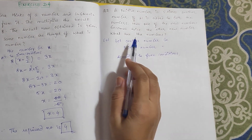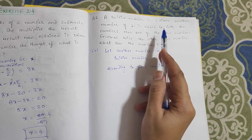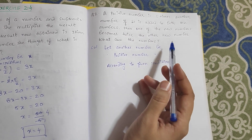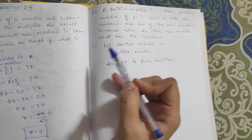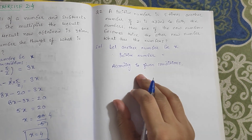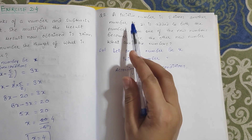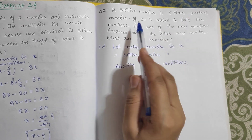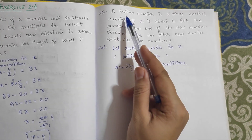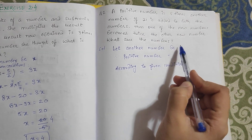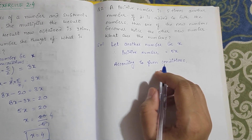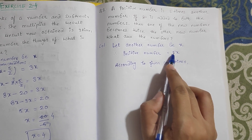Now let us see the second question of exercise 2.4. A positive number is five times another number. First, let us consider that the number be x. According to the given condition, a positive number is five times another number, and that another number is x. So the positive number will be five times x, that is 5x. This is the another number and this is the positive number which is 5 times the another number.